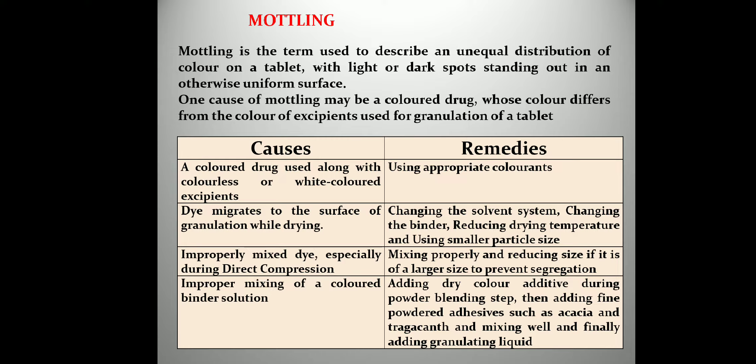The next defect is mottling. Mottling is the term used to describe an unequal distribution of color on a tablet, with dark spots standing out on an otherwise uniform surface. In simple terms, mottling is non-uniformity of tablet color — it may be different shades, spots of different color on a colored tablet, or black spots appearing on a white tablet.